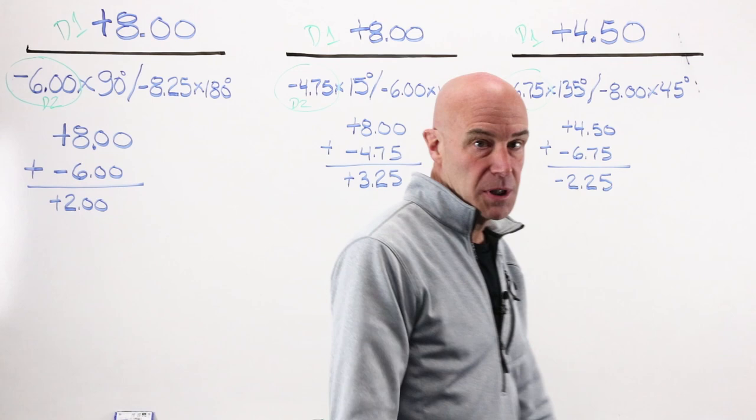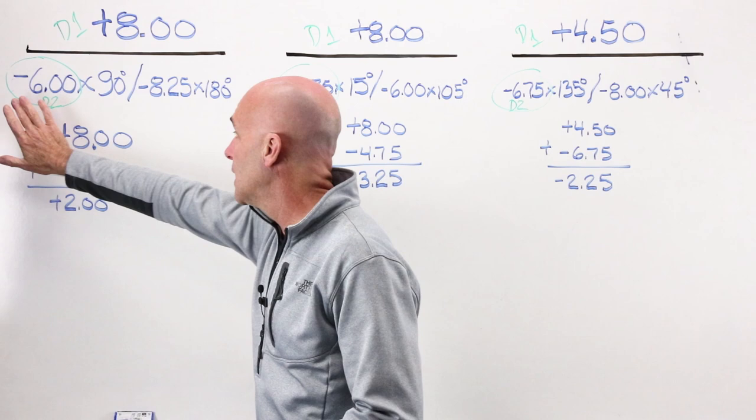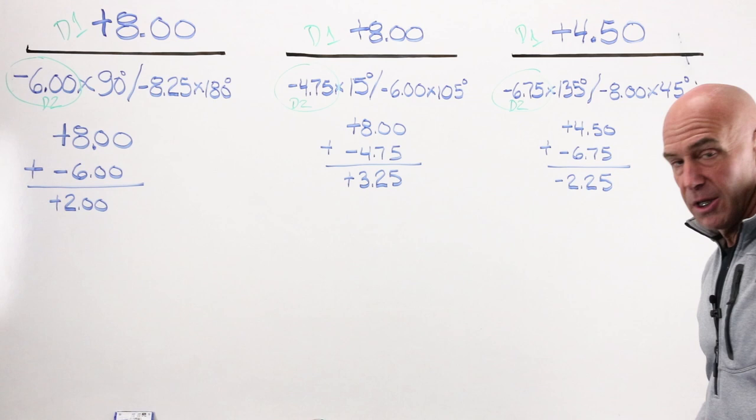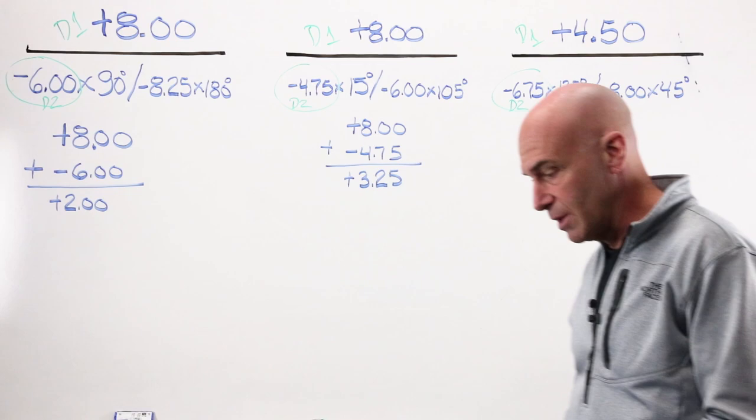If I take my plus 8 and I add it, just like the nominal lens formula, to my sphere power, I end up at plus 2. If I take my front curve and add it to my back curve, I end up at plus 3.25. If I take my front curve and I add it to my back curve, I end up at minus 2.25. That is not an answer. That doesn't give us anything. We have to keep running with this.